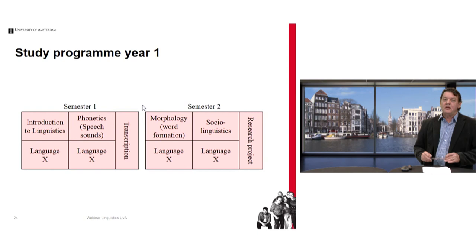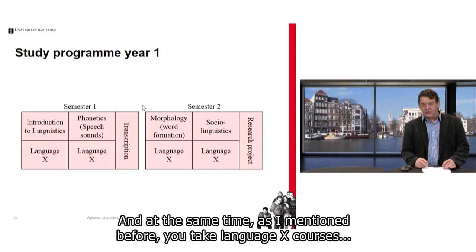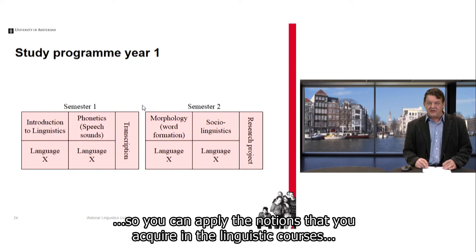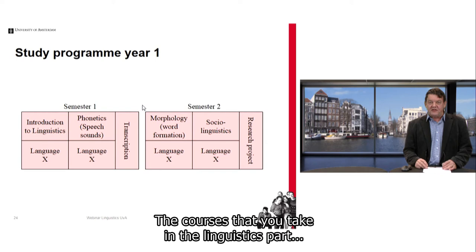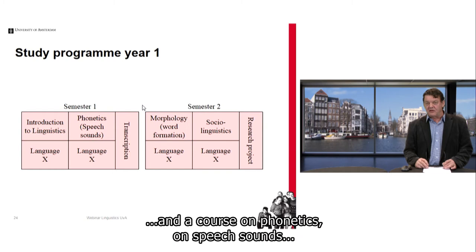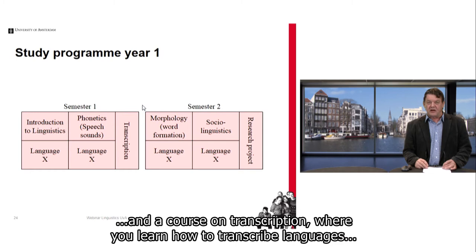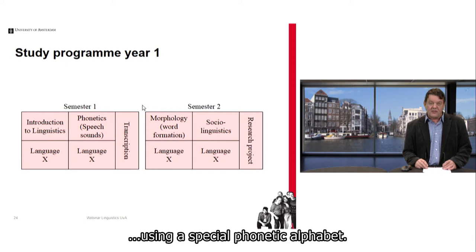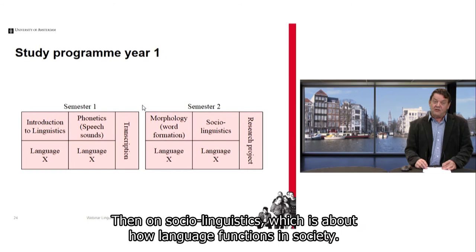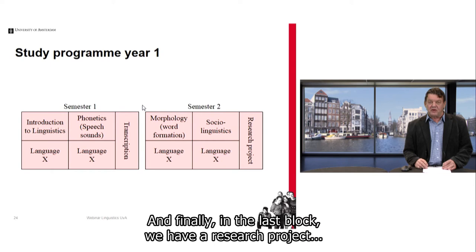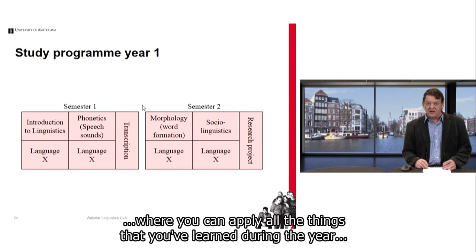In the first year you take linguistics courses and at the same time, Language X courses, so you can apply the notions you acquire in linguistics to the language you're studying. The courses in the linguistics part are: an introduction to linguistics, a course on phonetics and speech sounds, a course on transcription using a special phonetic alphabet, a course in morphology about the formation of words, a course in sociolinguistics about how language functions in society, and finally a research project where you apply everything you've learned with fellow students.